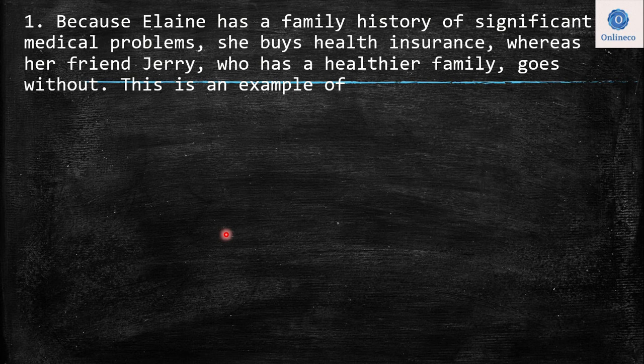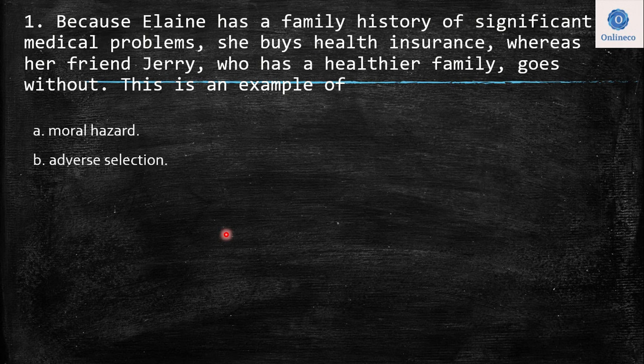Because Elaine has a family history of significant medical problems, she buys health insurance, whereas her friend Jerry, who has a healthier family, goes without. This is an example of moral hazard, adverse selection, signaling, or screening? Before going to the answer, I want to explain again the fast definition of those answers.